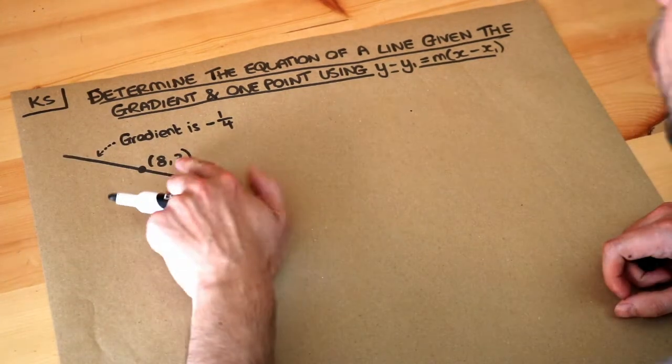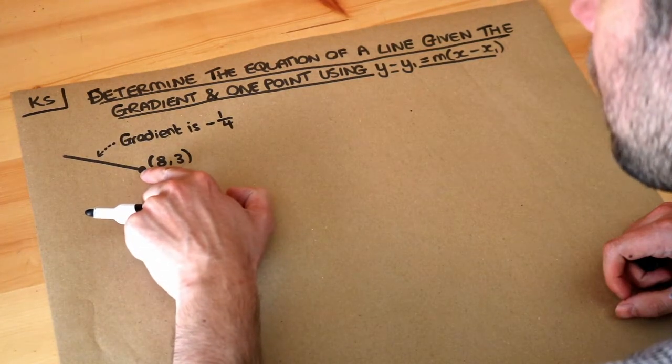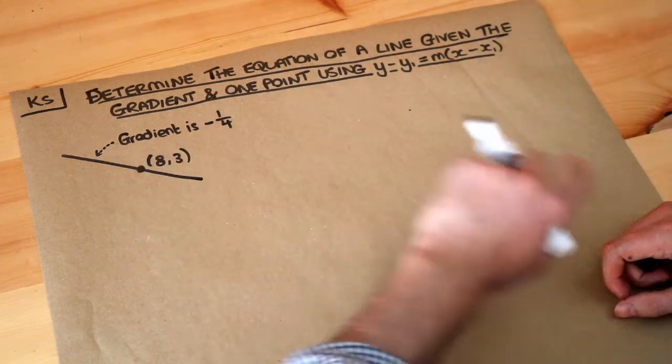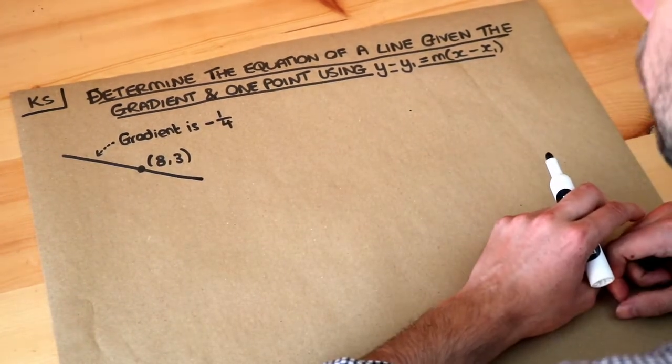So we've got a line here, we've got a point that it goes through, a fixed point of 8,3, and we're told that the gradient is minus a quarter.